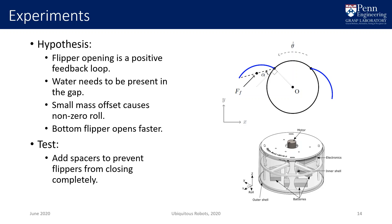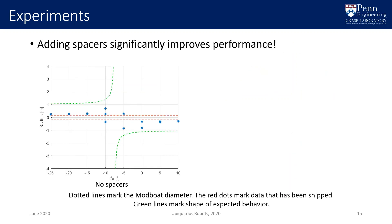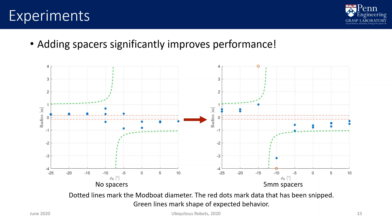To test this hypothesis, we added spacers to the bottom body cylinder that would prevent the flippers from closing flush against the bottom body. This should allow water to remain in the gap and lower the asymmetry. Repeating the center of mass variation experiments with the spacers, we observed a significant improvement in performance. This plot shows that we now observe radii far larger than the modboats in the region between minus 15 and minus 10 degrees, which are effectively straight lines. The radii decrease sharply as the offset increases, which is not good, but the overall shape matches the expected behavior, and these results strongly support our hypothesis. The true ideal behavior, however, would have approximately straight trajectories over a much wider range.